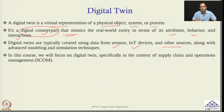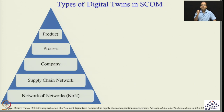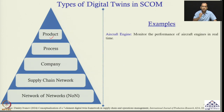In this course, we will specifically focus on digital twin from a supply chain and operations management point of view. Before we go ahead, we need to understand the different types of digital twins that exist. The first is the product level digital twin. For example, the digital twin of an aircraft engine helps us to monitor the performance of aircraft engines in real time.